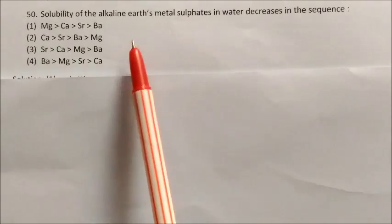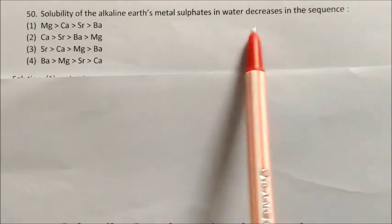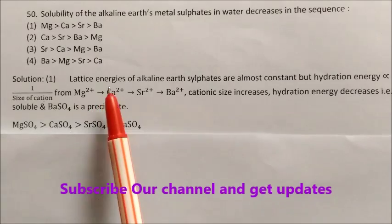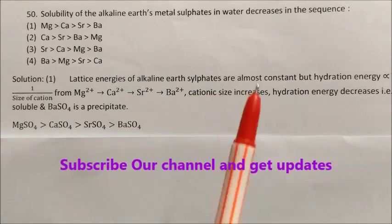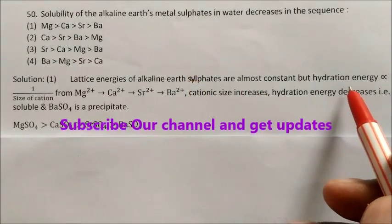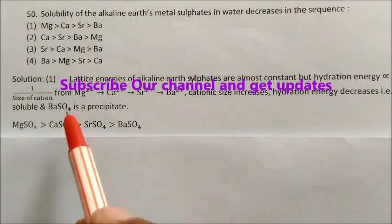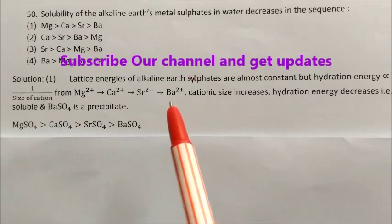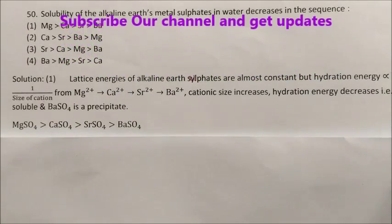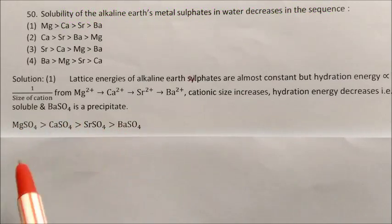Question: Solubility of alkaline earth metal sulfates in water decreases in a certain sequence. Why does it decrease? The lattice energy of alkaline earth sulfates is almost constant. Hydration energy is inversely proportional to the size of the cation. As cationic size increases, hydration energy decreases. That is why magnesium sulfate is soluble and barium sulfate is a precipitate. Answer is option 1.